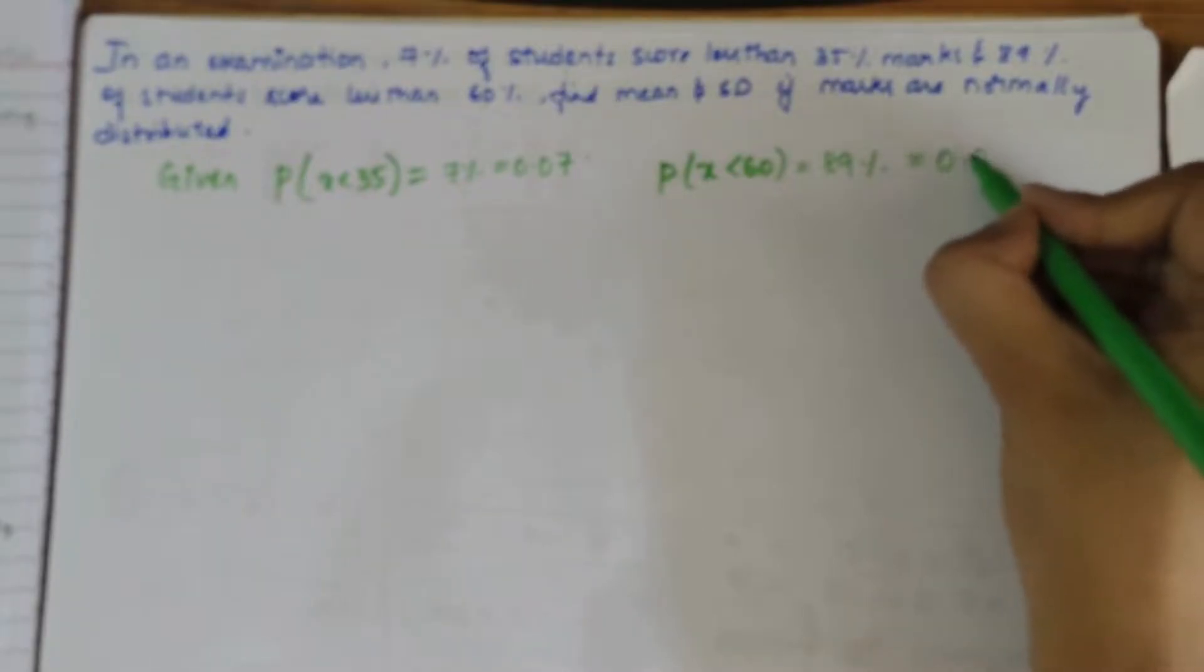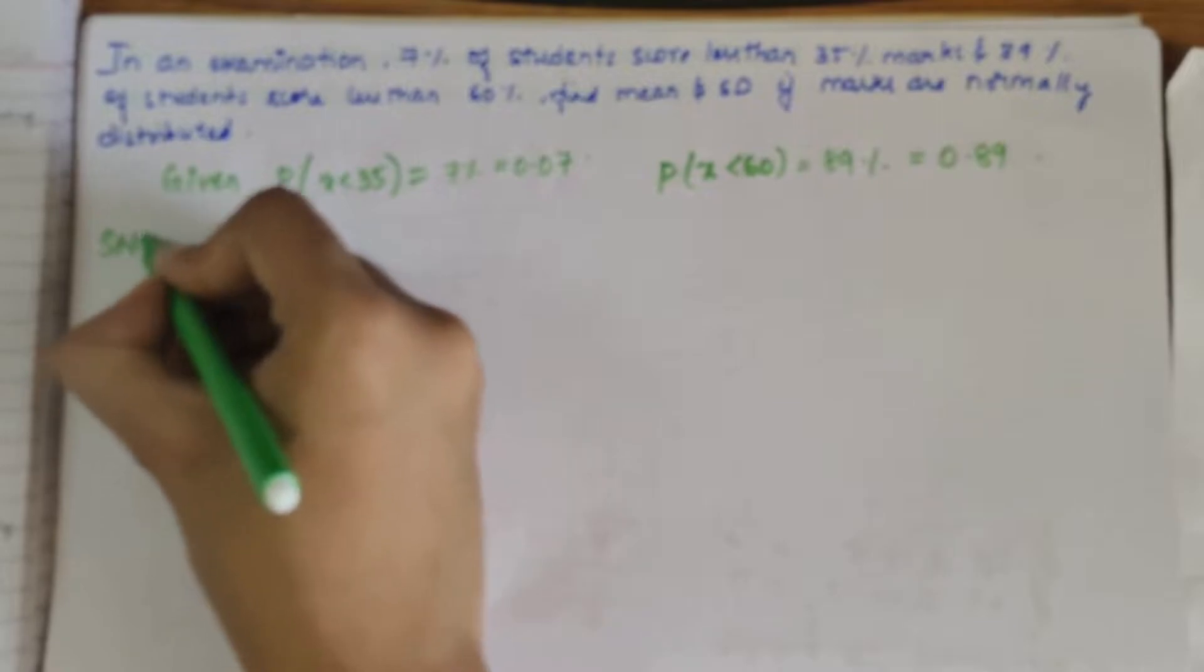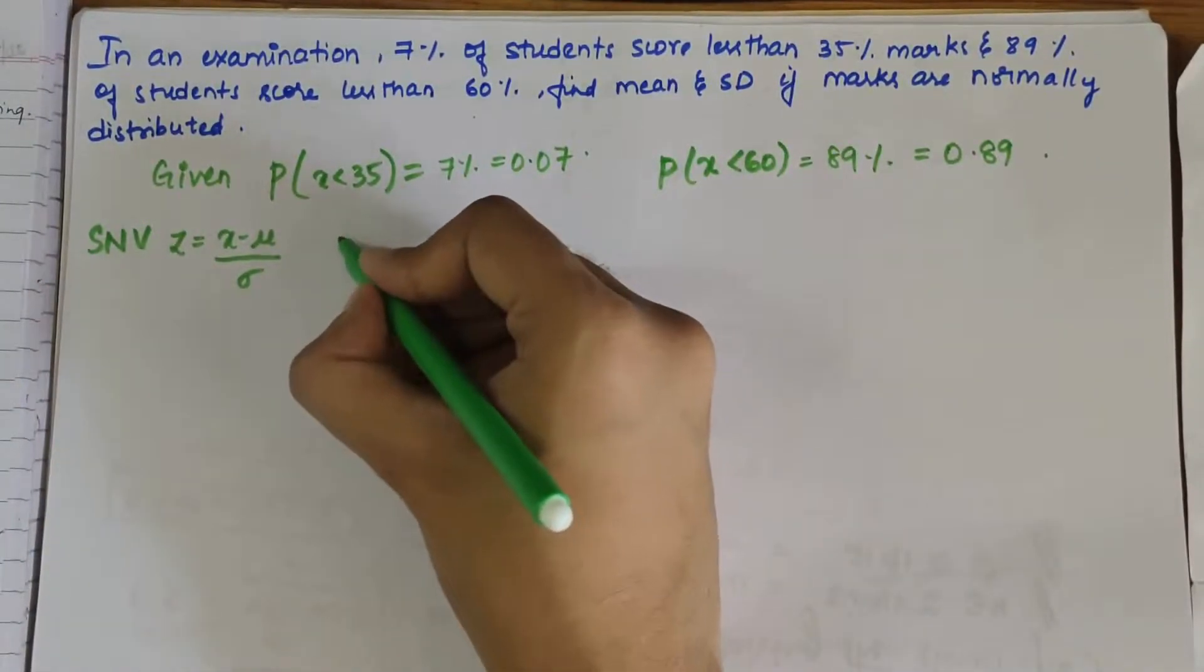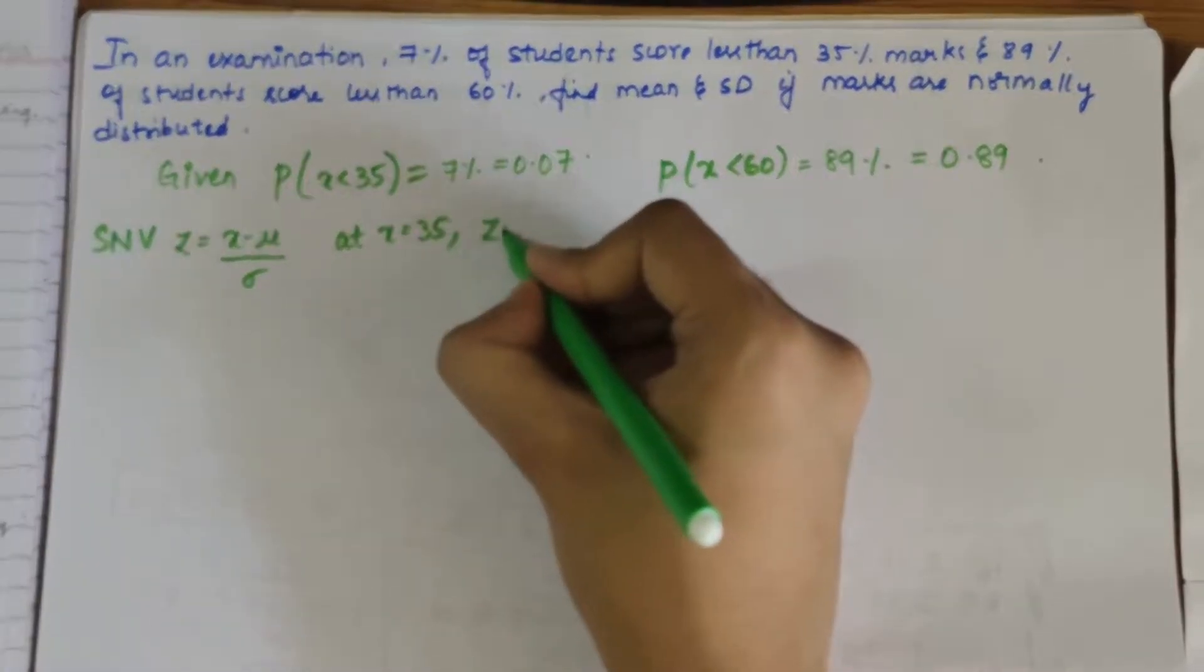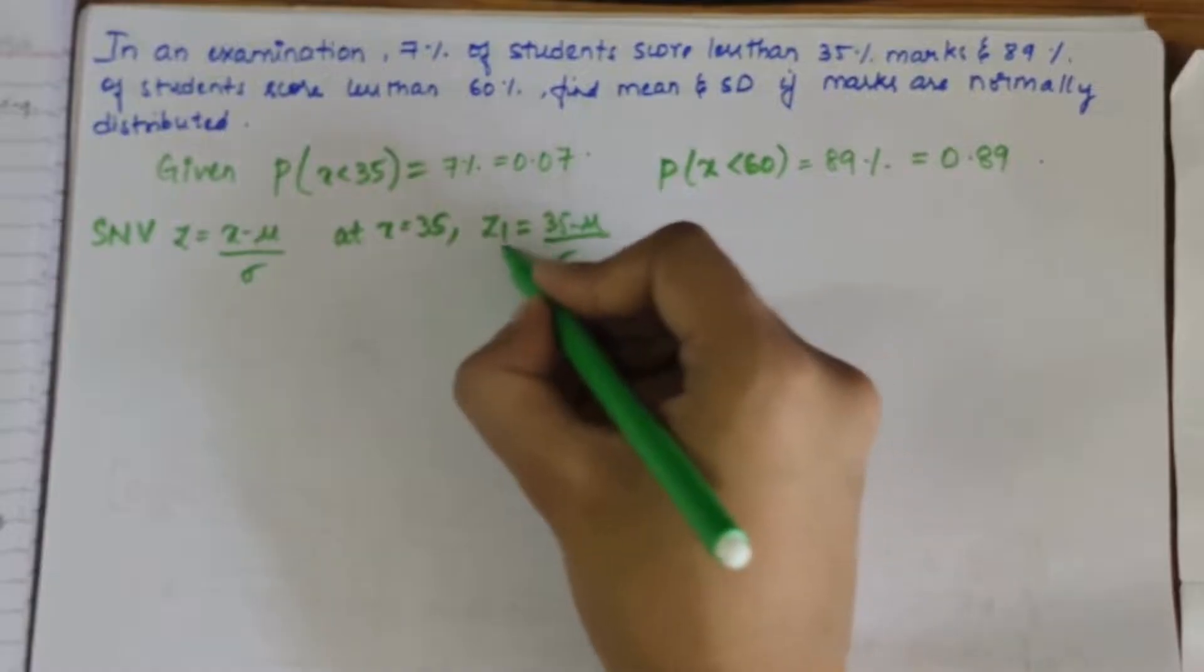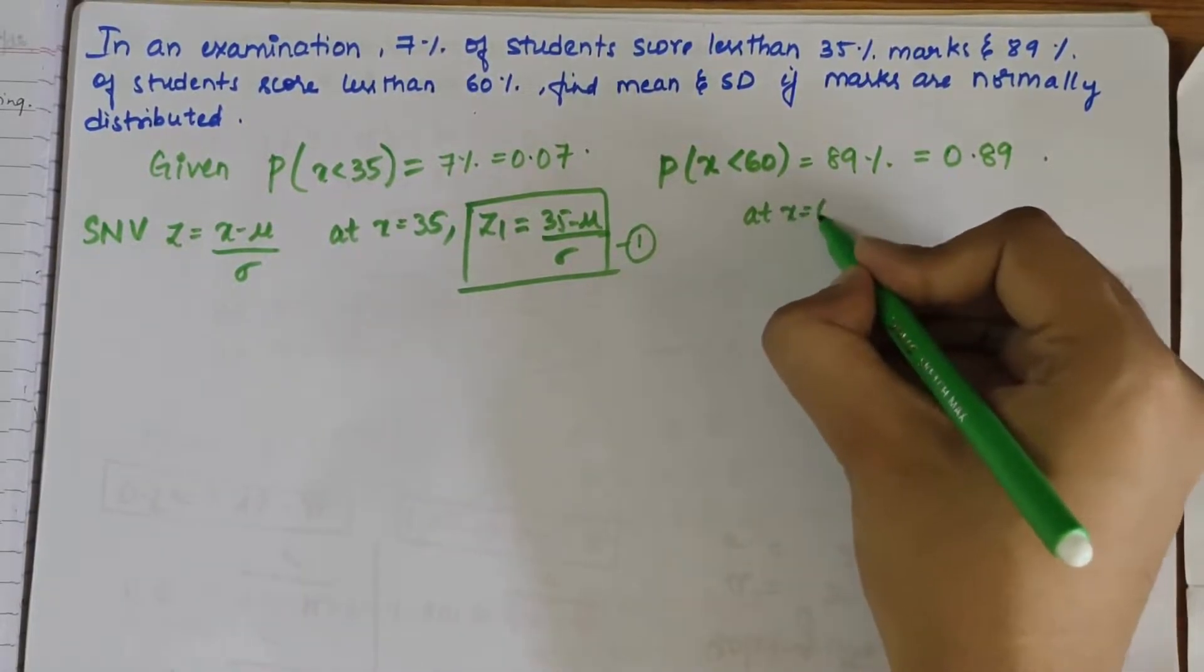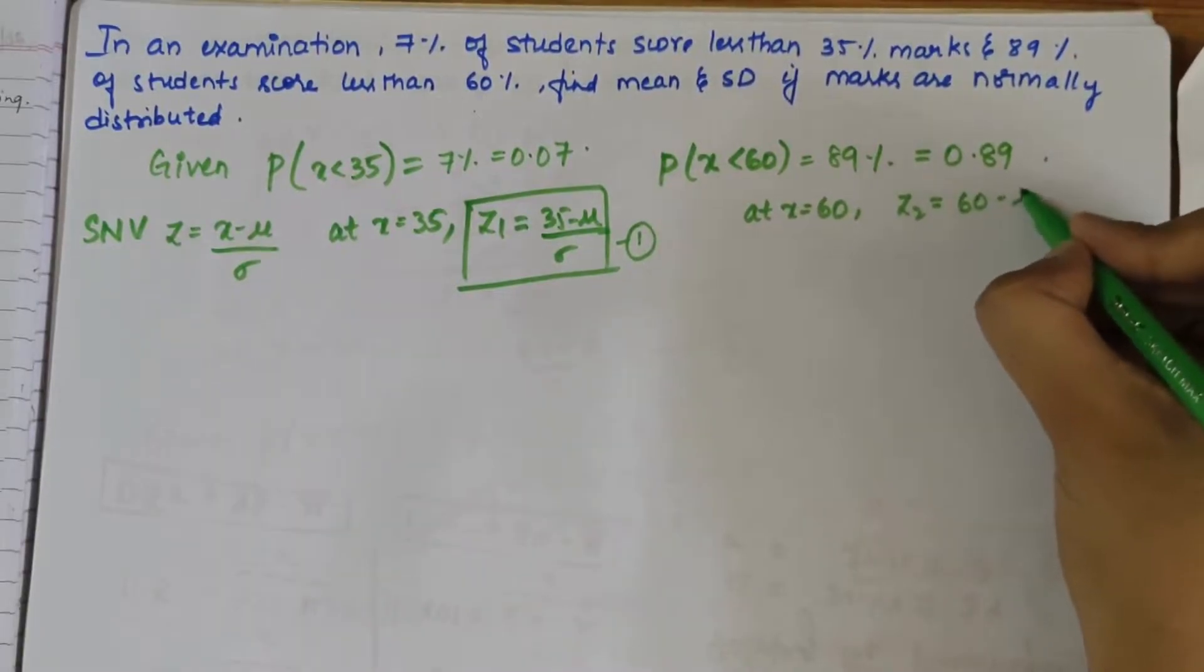Now writing the standard normal variate formula, that is Z equals X minus mu by sigma. Writing for at X equals 35, Z1 would become 35 minus mu by sigma. This will be our first equation. And at X equals 60, Z2 will become 60 minus mu by sigma. This is our second equation.